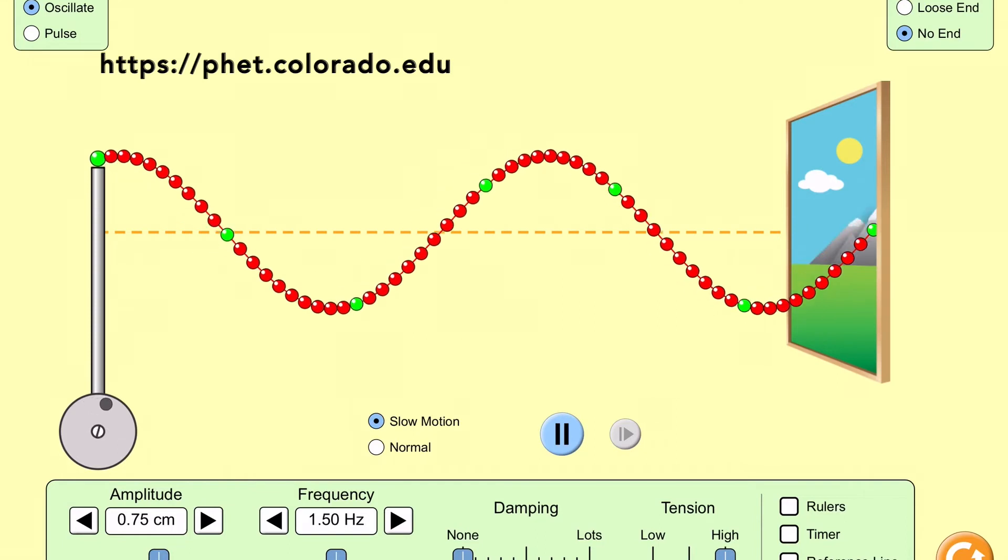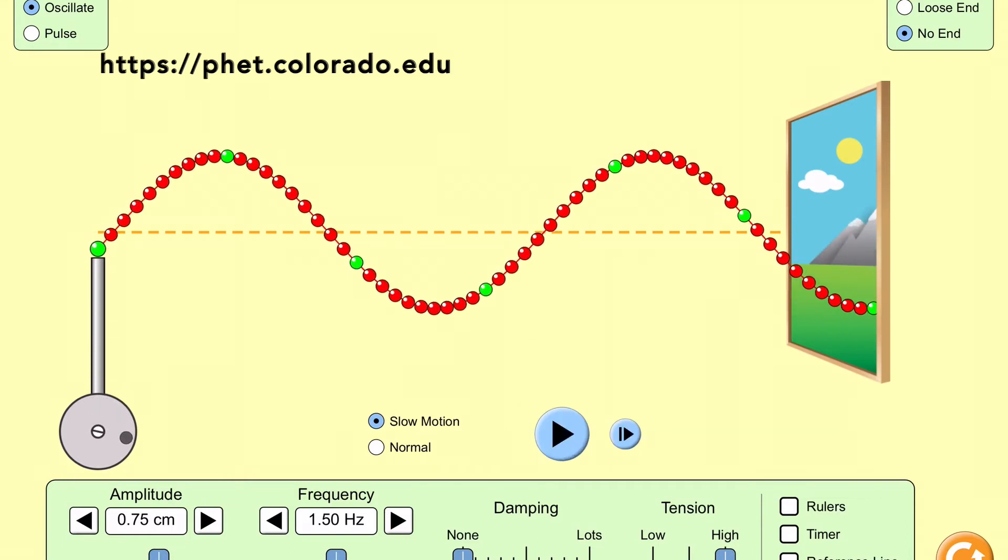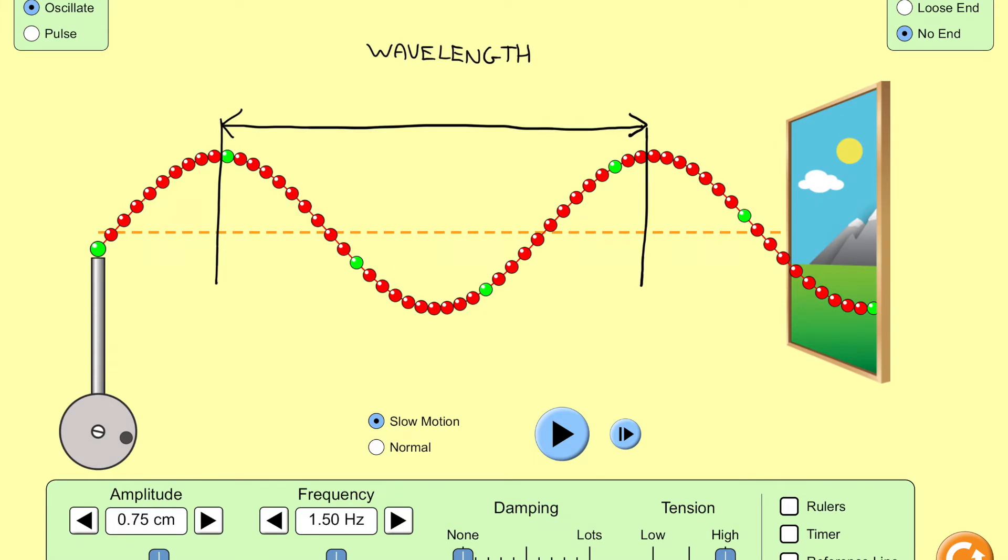Now I'm going to pause the wave here for a second, almost like I took a snapshot or a picture of it and I'm looking at a nice freeze frame of the wave. In this wave, which we call a periodic wave, you can see that it has a repeating pattern of peaks and valleys.